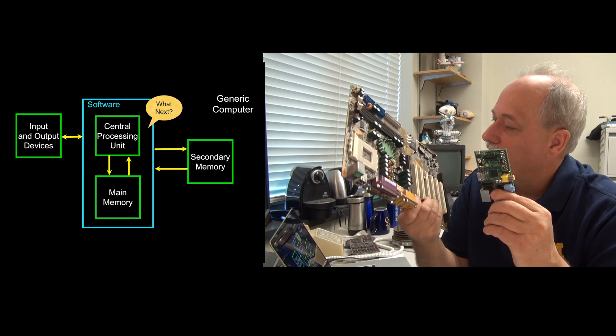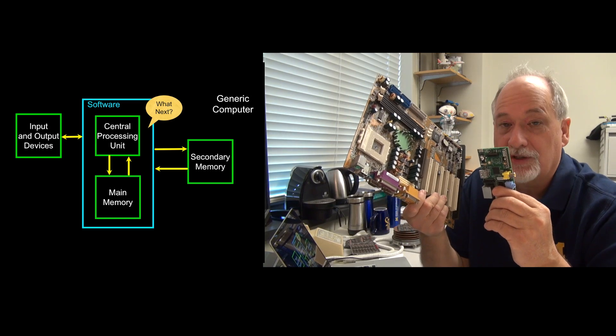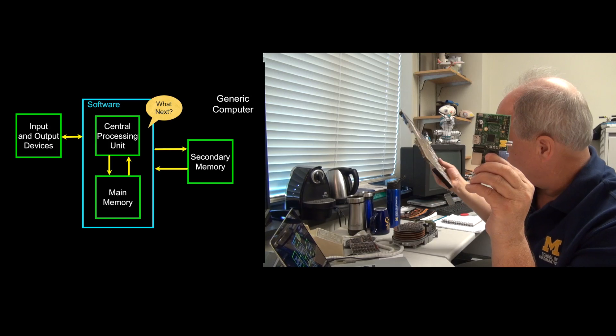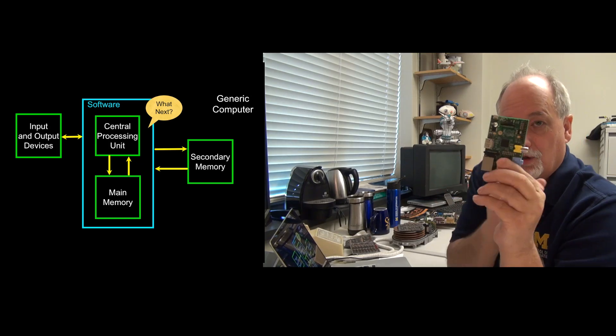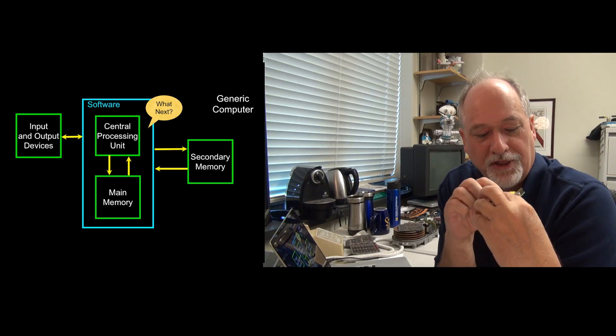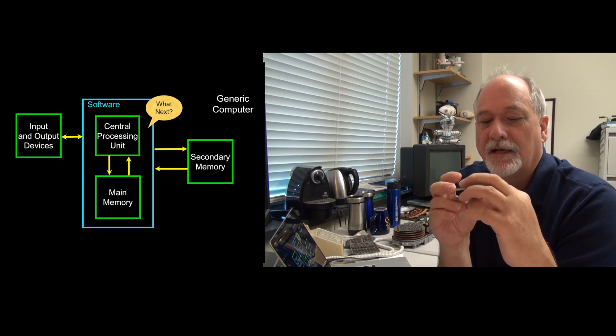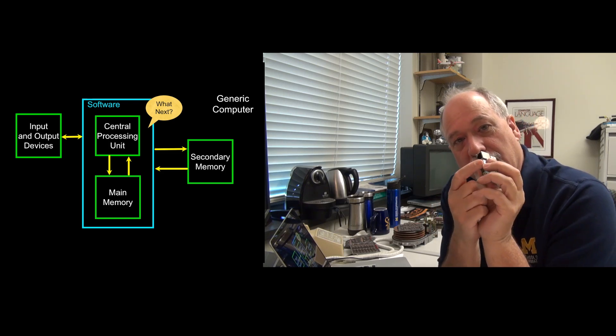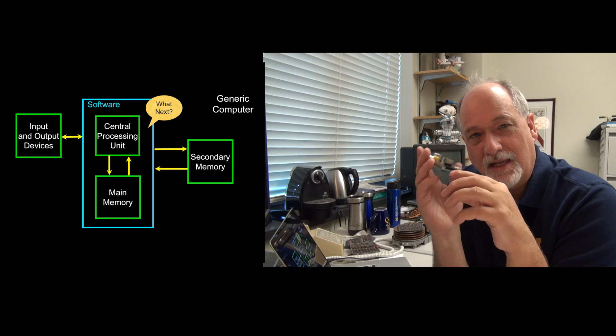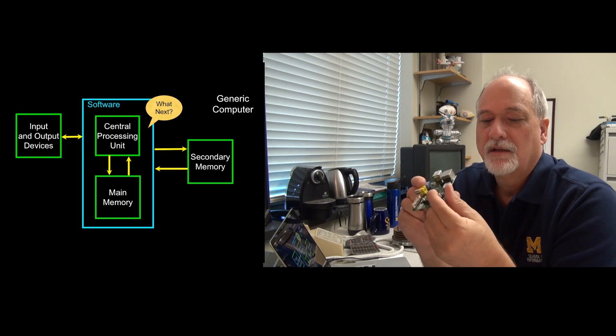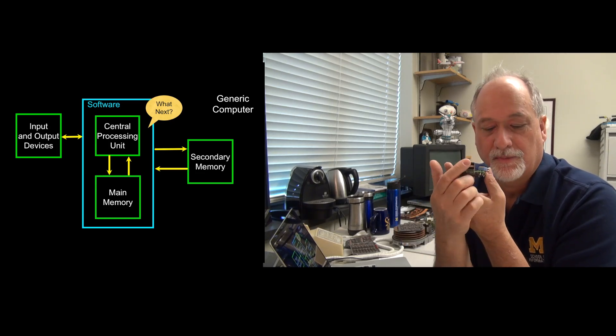And so this little single board computer called a Raspberry Pi has one thing in it, and it has the main memory, and it has the CPU, it has connections for things like peripherals, like keyboards and stuff. Now it doesn't yet have secondary storage on it. The secondary storage gets plugged in right here via USB.